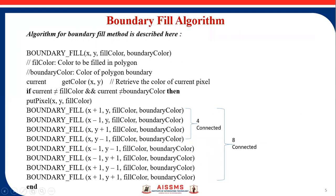Now we will see the boundary fill algorithm — what it is and how it is used to fill a polygon. The working mechanism is: the boundary fill algorithm starts with some interior pixel of the polygon, called the seed pixel, and keeps filling neighbouring pixels in an outward direction. The parameters are x and y coordinates, fill colour (the colour we are going to fill), and boundary colour (the existing colour of the polygon boundary). The algorithm fills neighbouring pixels outward until the boundary colour is encountered.